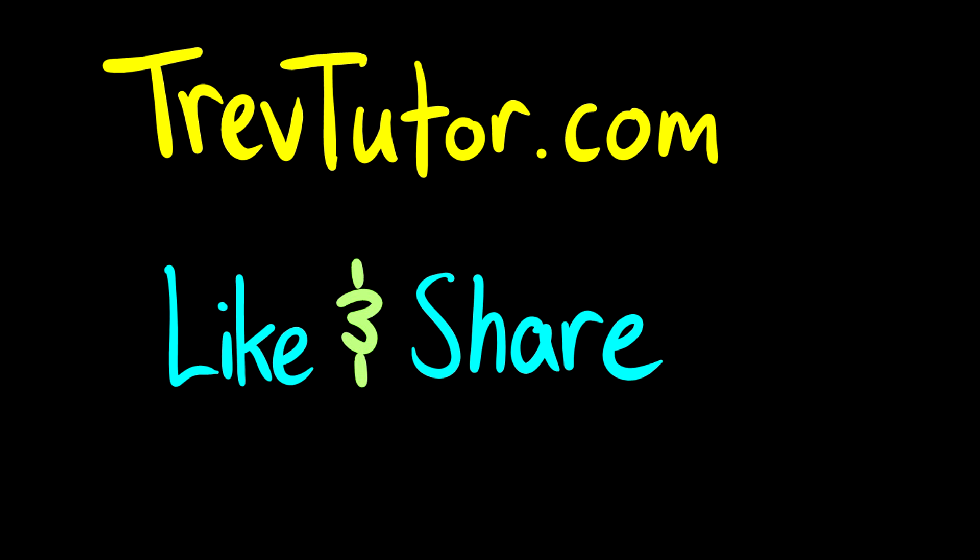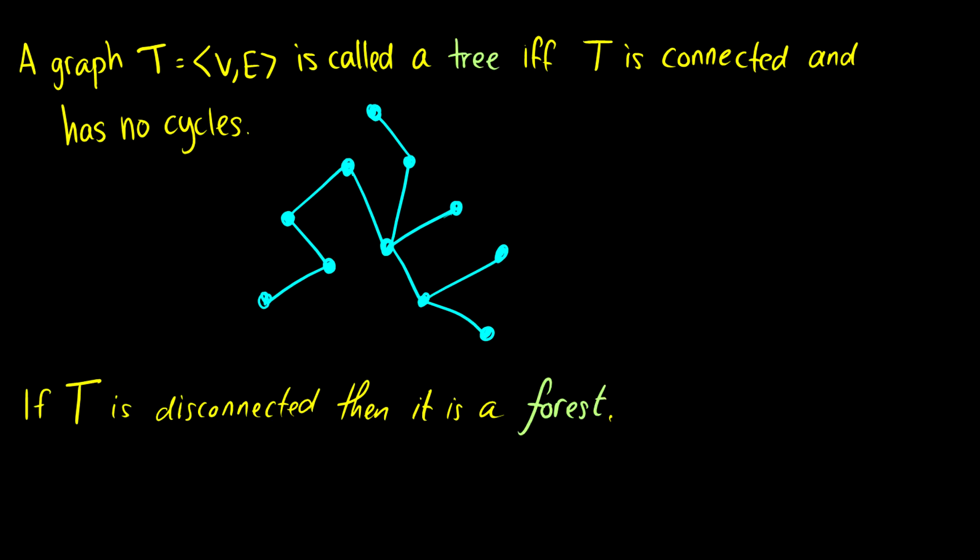In this video, we're going to talk about trees. So a graph T is called a tree if T is connected and has no cycles. So basically what this means is that all our vertices are connected by edges and there is no possibility of having a loop in the graph.